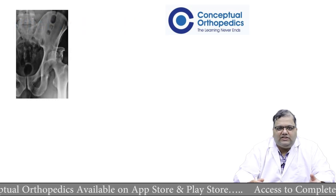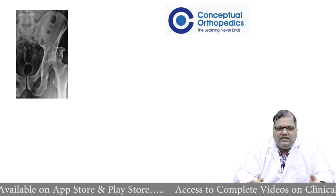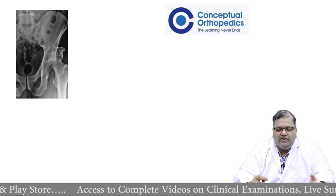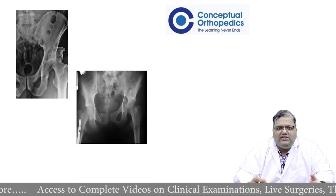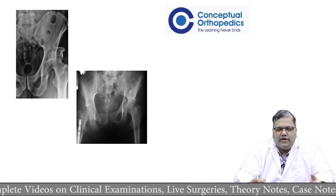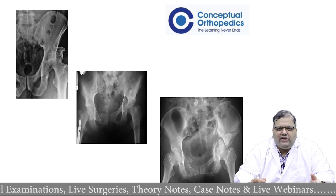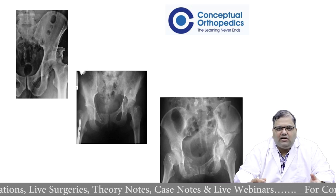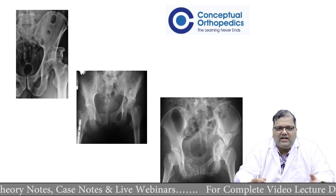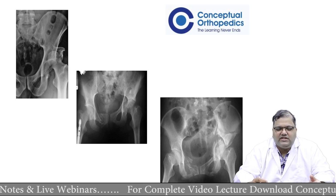When we come across acetabular fractures, we get a little confused. For example, in this case the fracture seems to be pretty simple but the head is dislocated. In this, the fracture is simple but the femoral head looks to be in the joint. And in this case, although the fracture looks a little complicated — a complex pattern — the femoral head looks subluxated or dislocated. So what exactly happens in an acetabular fracture and why does it happen? Let us try to understand that.